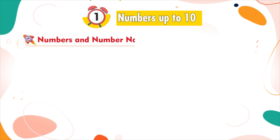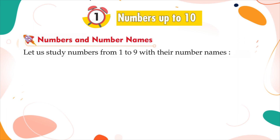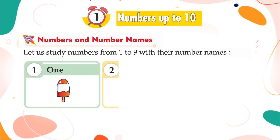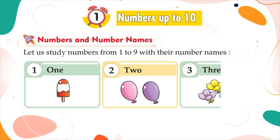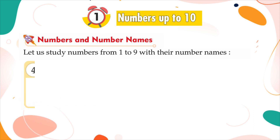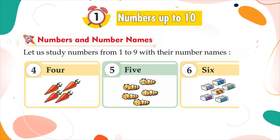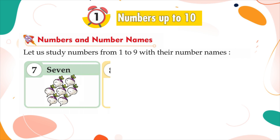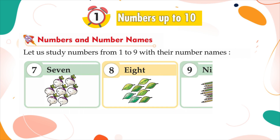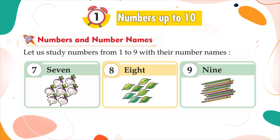Numbers and number names. Let us study numbers from 1 to 9 with their number names. O-N-E: 1, T-W-O: 2, T-H-R-E-E: 3, F-O-U-R: 4, F-I-V-E: 5, S-I-X: 6, S-E-V-E-N: 7, E-I-G-H-T: 8, N-I-N-E: 9.